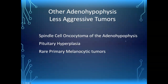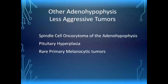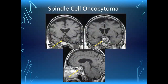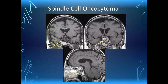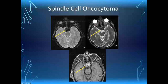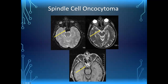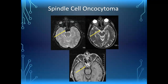Some other non-aggressive lesions: spindle cell oncocytoma of the adenohypophysis, pituitary hyperplasia, and rare primary melanocytic tumors. A typical oncocytoma or spindle cell oncocytoma is very heterogeneous on both non-contrast and post-contrast images. They can be solidly enhancing too — just because this one is heterogeneous doesn't mean they all are. This one happened to have a lot of hemosiderin deposition, giving very low signal on gradient echo with a stippled appearance. Several different types of pituitary tumors can have these same features, including craniopharyngiomas.